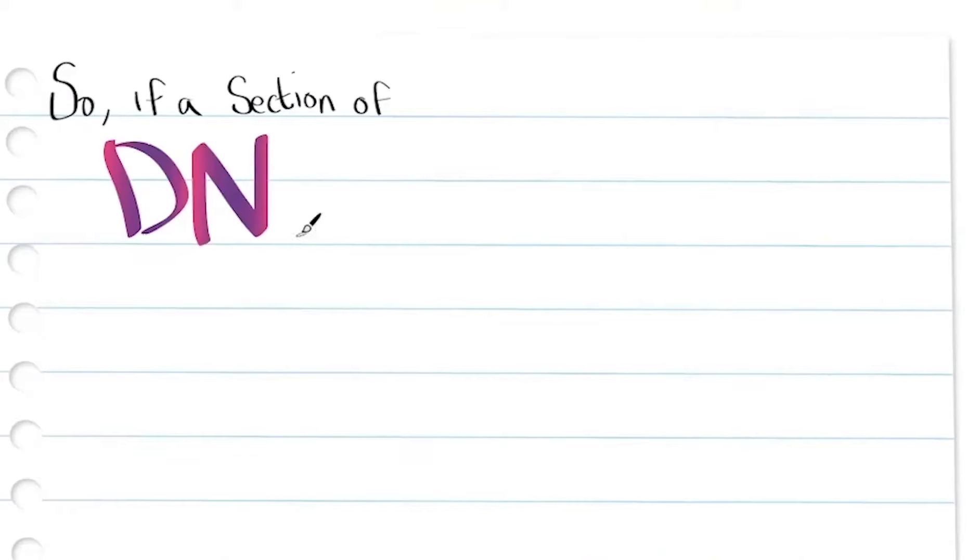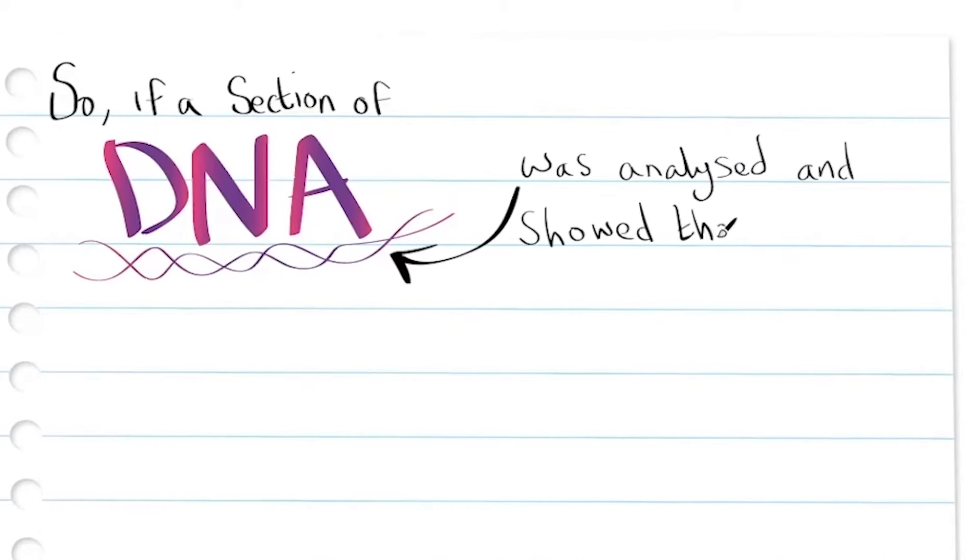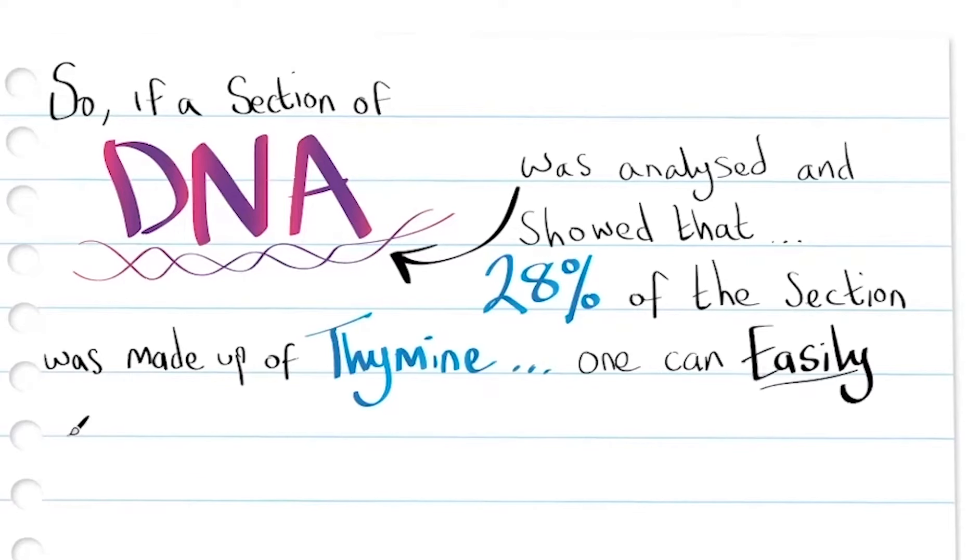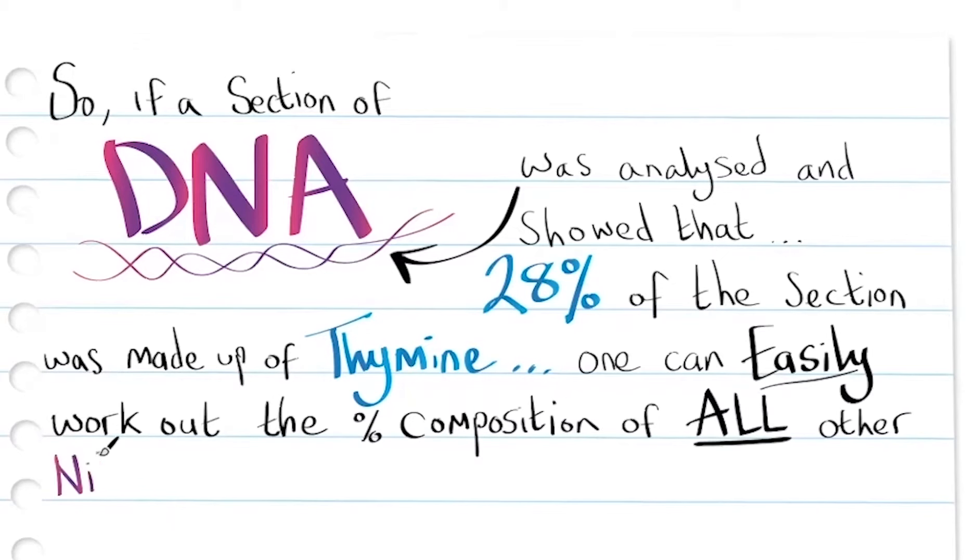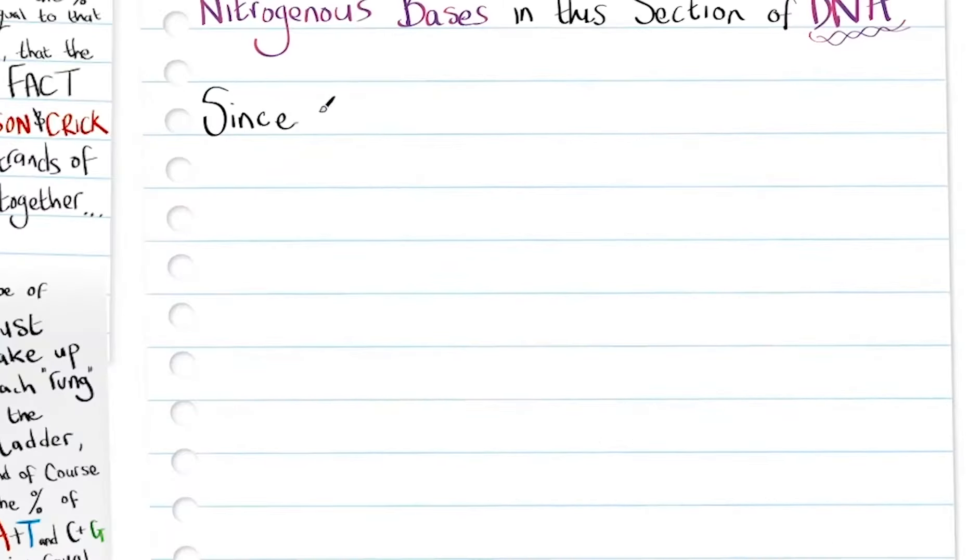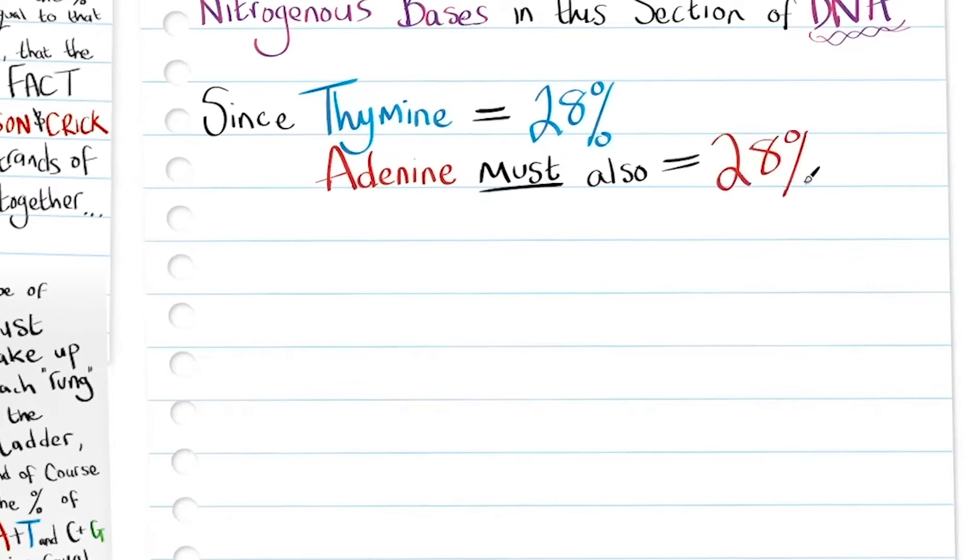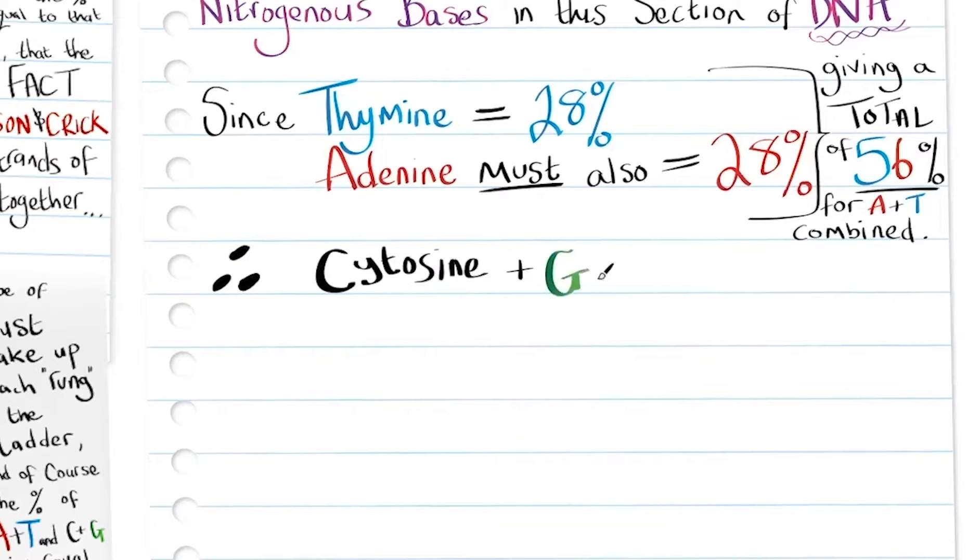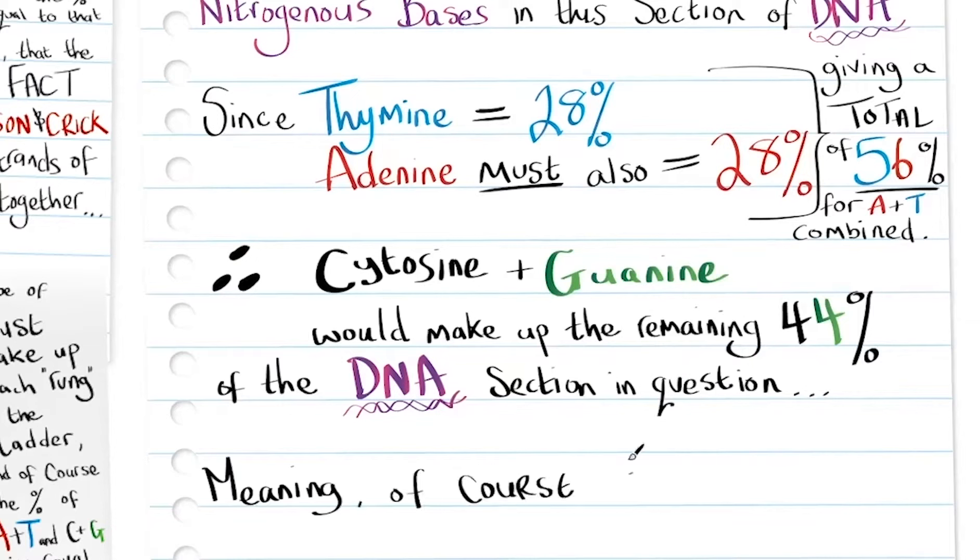So if a section of DNA was analyzed and showed that 28% of the section was made up of thymine, one can easily work out the percentage composition of all the other nitrogenous bases in this section of DNA. Since thymine equals 28%, adenine must also equal 28%, giving a total of 56% for adenine and thymine combined. Therefore, cytosine and guanine would make up the remaining 44% of the DNA section in question, meaning of course that cytosine equals 22% and guanine also equals 22%.